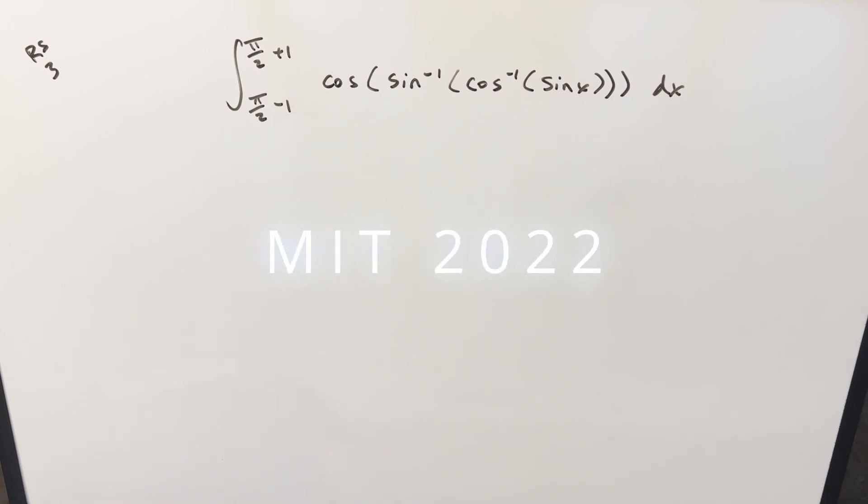Okay, we've got an interesting integral here today from the MIT Integration Bee 2022, regular season number three. We have the integral from π/2 minus 1 to π/2 plus 1 of cosine of arcsine of arccosine sine x dx.